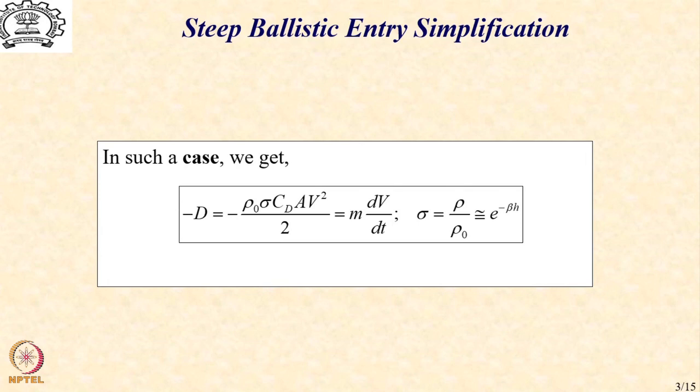Further, we also have an altitude term through the parameter sigma which represents the ratio of the density at an altitude h with respect to the sea level density rho 0. And is typically expressed as an exponentially decaying function with beta as the parameter.